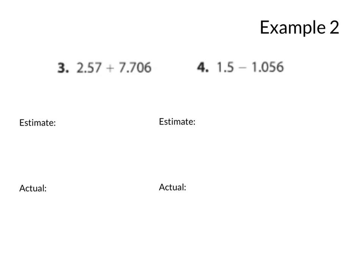For example two, we have two problems. Both of them should be written. And notice that I also have some support to help you. I have an estimate and an actual. So you're going to estimate both of these and add them for this one and subtract for this one. And then you're going to find the actual answer. When you're ready for the answers, please unpause the video. We're going to show you in five, four, three, two, one.